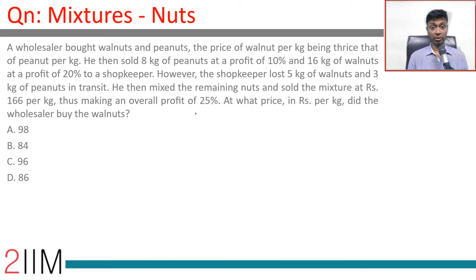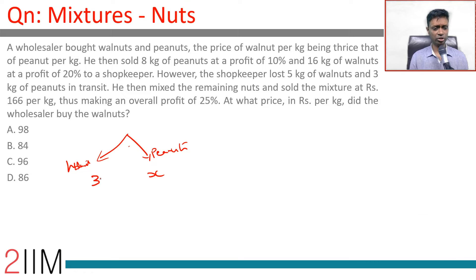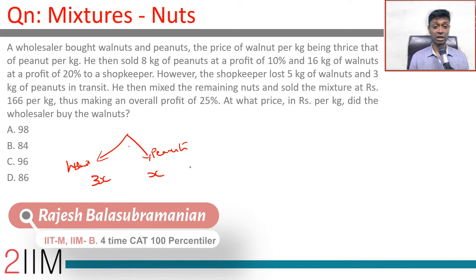A wholesaler bought walnuts and peanuts, the price of walnut per kilogram being thrice that of peanut per kilogram. So walnut and peanuts, this is x per kilogram, this is 3x per kilogram. He then sold 8 kg of peanuts